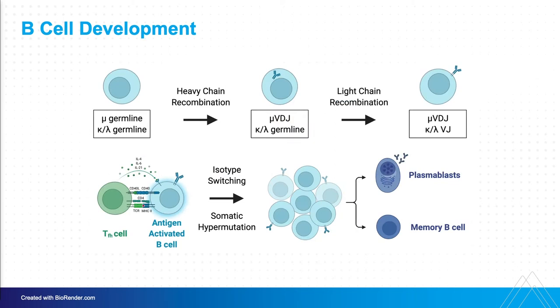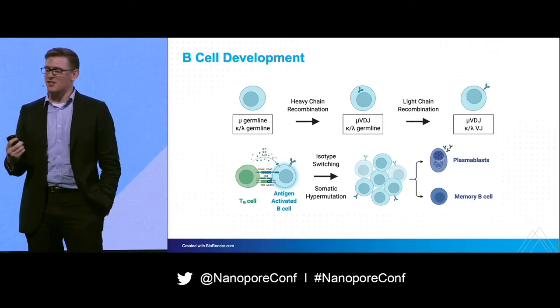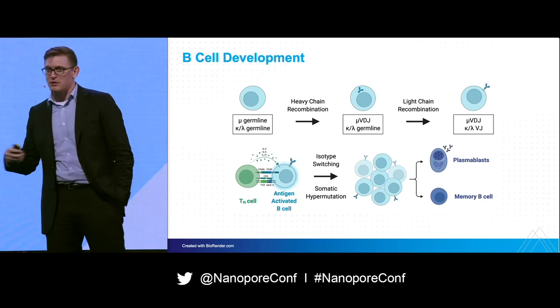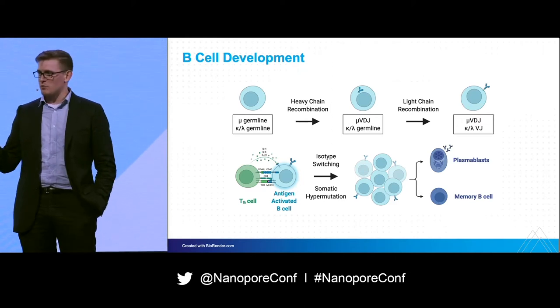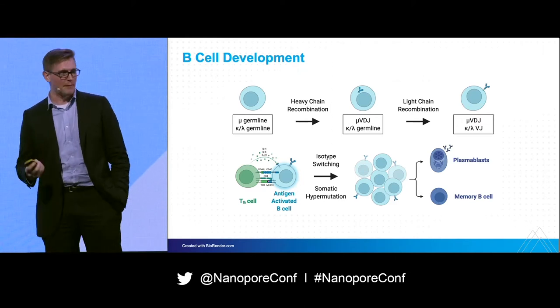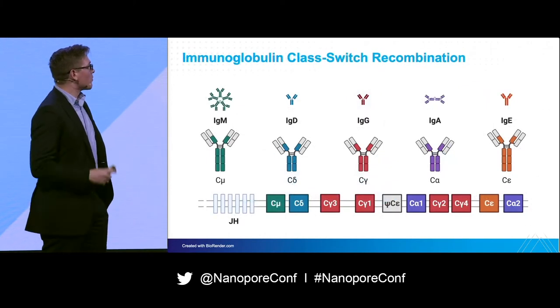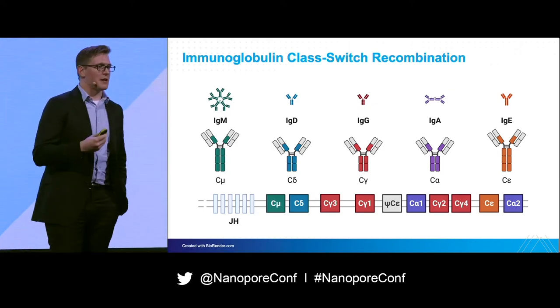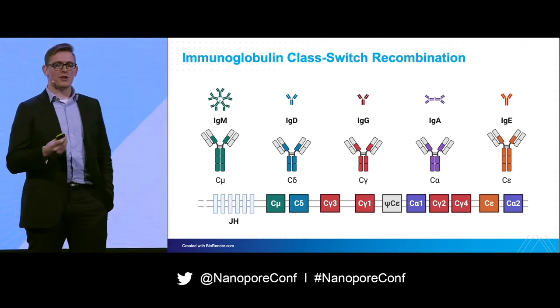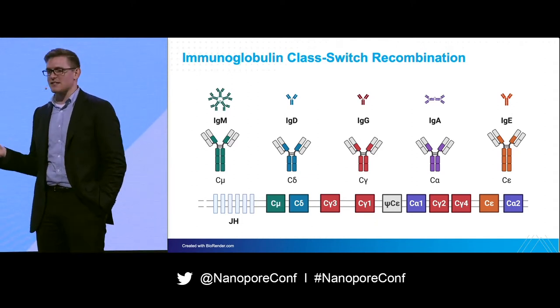Once you have this full recombination, an antigen comes in, you get activated, and you go through proliferation. During that process we also go through isotype switching and somatic hypermutation. Then you differentiate into plasmablasts, which produce tons of antibody, and memory B-cells, which sustain the memory of what you've seen before. The effector functions of an antibody are driven by the isotypes — they might decide whether it pushes antibody-dependent cell-mediated cytotoxicity, neutralization, or opsonization.